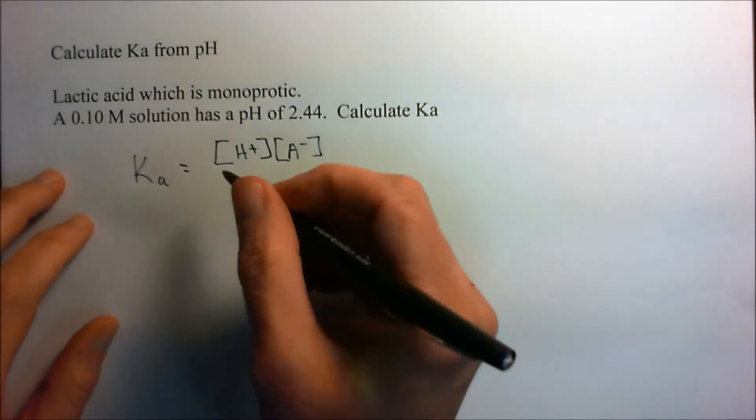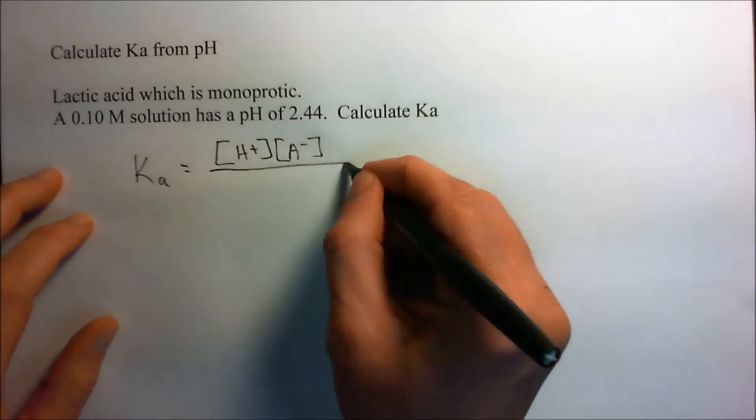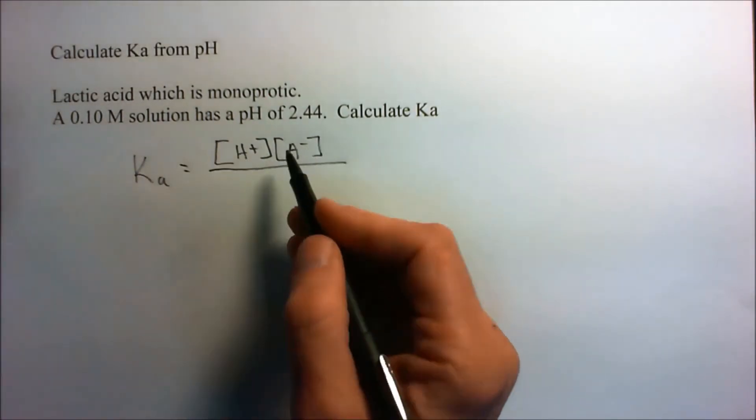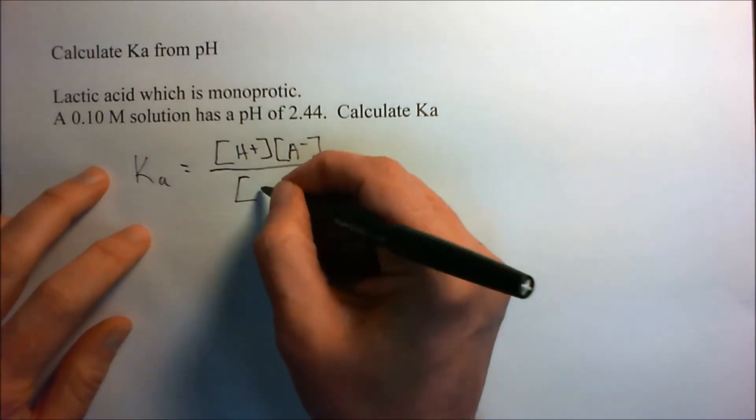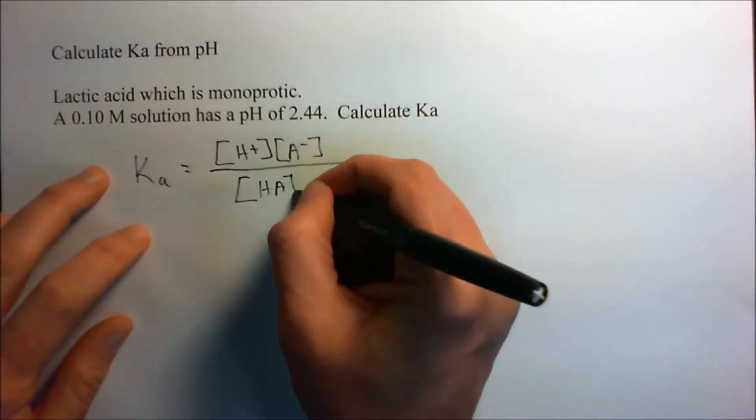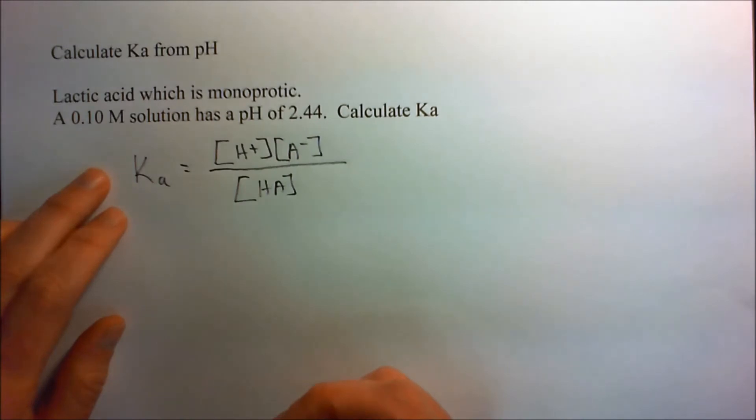Now, since it's monoprotic, these two are going to be 1 to 1. And if it wasn't, we would just say 2 times or 1 time or 3 times or whatever. And then we would have the non-dissociated acid on the bottom.